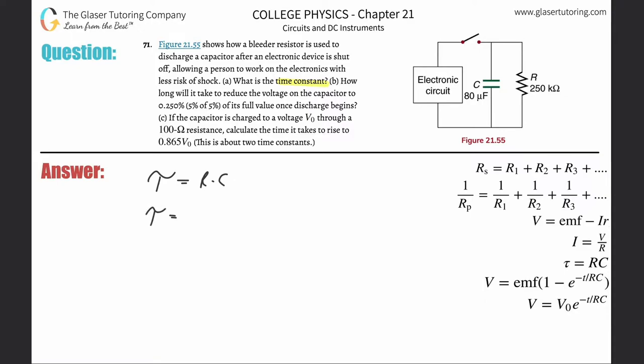The resistance they told us was 250 kilo ohms. We need that in ohms, so take 250 multiplied by 10 to the third. The capacitance is in microfarads, so take 80 multiplied by 10 to the minus sixth, and voila, here's our time constant.